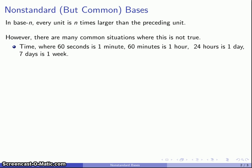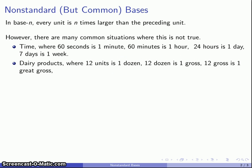And note here that our trade rate changes from 60 to 1, 60 to 1, to 24 to 1, to 7 to 1. A similar situation occurs when we look at dairy products. So I have 12 units making up a dozen, 12 dozen making up a gross, 12 gross making up one great gross. But I don't have a name for anything more than 12 great gross.